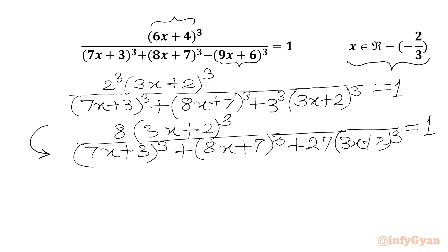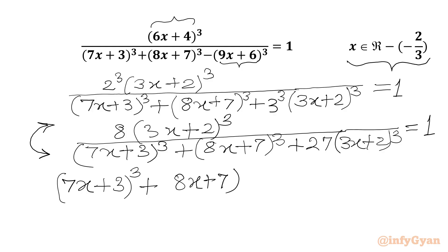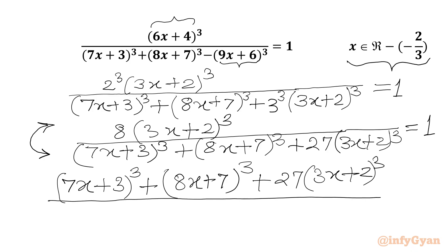Now I will flip numerator and denominator — we will switch numerator and denominator. So we will write our equation: (7x plus 3) whole cube plus (8x plus 7) whole cube plus 27 times (3x plus 2) whole cube. Now our numerator will become denominator, so we will write here 8 times (3x plus 2) whole cube. In RHS, the reciprocal of 1 over 1 will be 1, so I will write 1.